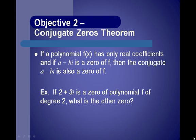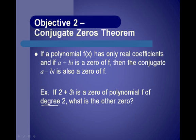Objective 2: Conjugate Zeros Theorem. If a polynomial function has only real coefficients, and if a plus bi is a zero of the function f, then the conjugate a minus bi is also a zero of f. So you can't just have one complex zero — they always have to come in pairs. For example, if 2 plus 3i is a zero of a polynomial function of degree 2, the other zero is its conjugate, 2 minus 3i.